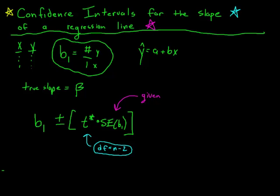The reason for that is that you have two variables: you have x and y. Because I have two variables, x and y, I have to do n minus 2 for my degrees of freedom. You could use invert T on your calculator to find your t star based on your level of confidence, or you could use the t chart as well.